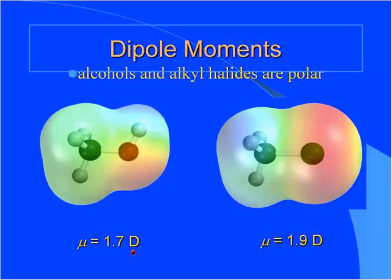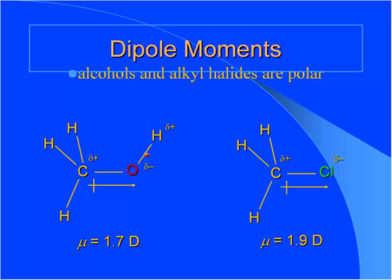There is a difference between the two families — alcohols and alkyl halides. In one case, oxygen is connected to hydrogen; in the other case, chlorine is not connected to hydrogen. So hydrogen bonding is going to be a great difference between the two species. Polarity is going to be present in both, but in one case hydrogen bonding will be there and in the other case it won't.